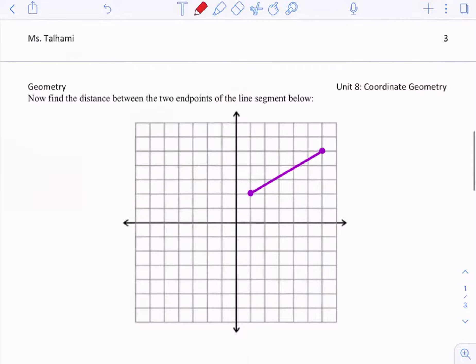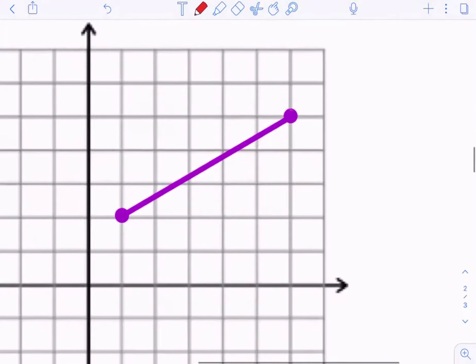But what happens when I have two points like this? So if you notice, it's a diagonal line. I can't easily just count the spaces because look, these are not really fair, they're not all correct lengths of spaces. So really what we're going to do here is we're going to create a right triangle using these two points. So if I create a right triangle by making a horizontal line and a vertical line. So here's my right angle.